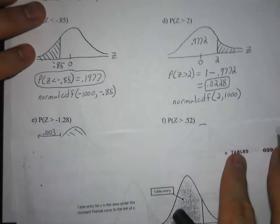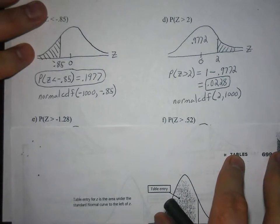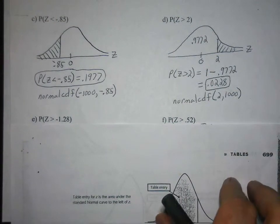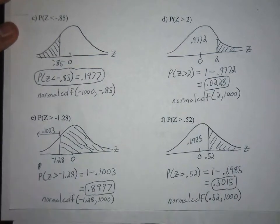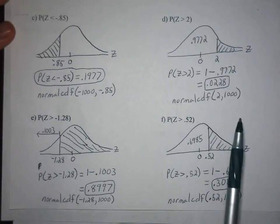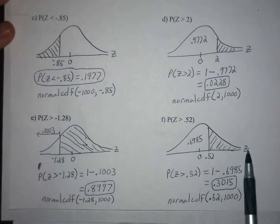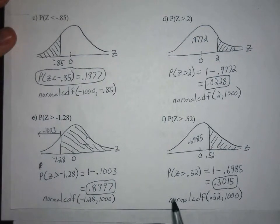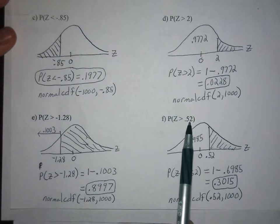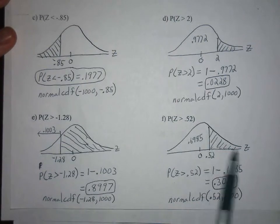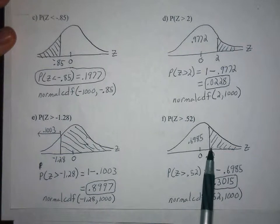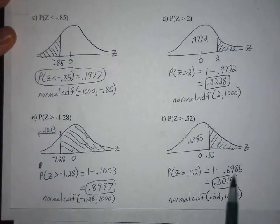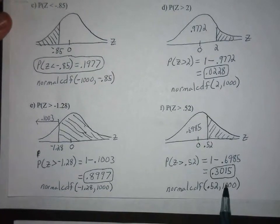The next two examples are similar to part D — for area to the right, you use 1 minus the table value. For the calculator using normal CDF when Z is greater than a value, for example Z greater than 0.52, the left z-score is positive 0.52 and for the right bound you use positive 1,000 to represent positive infinity. You always enter left z-score comma right z-score.